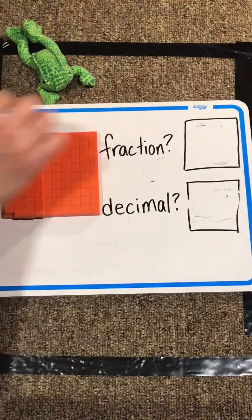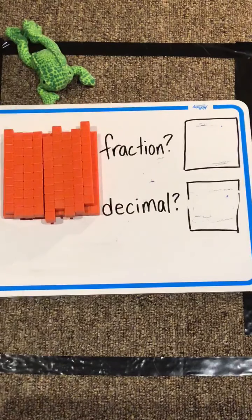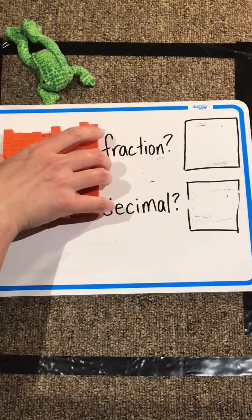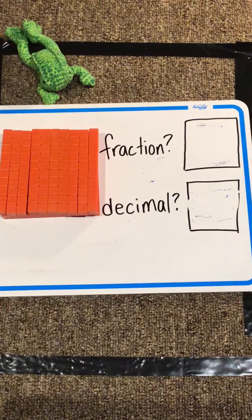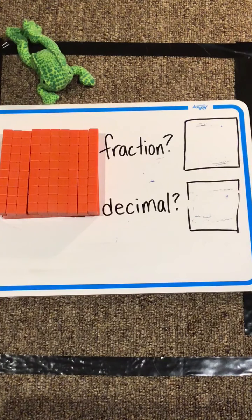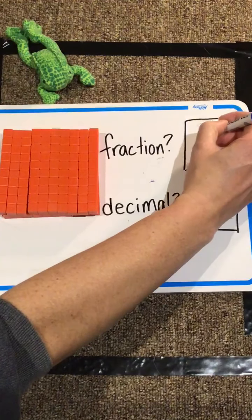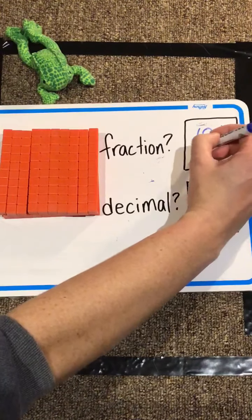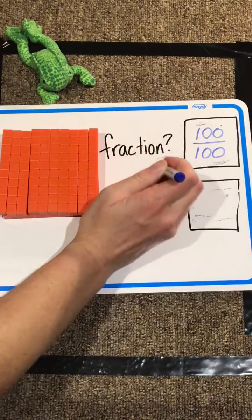One more, what if we cover up our cake with all of these? So we have completely covered up this cake, so our fraction, we've covered all one hundred pieces, so we have one hundred one-hundredths.